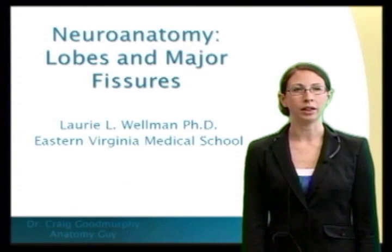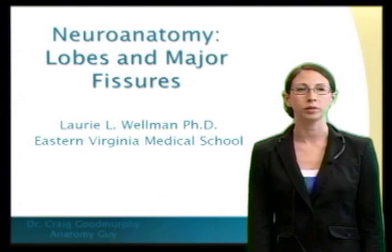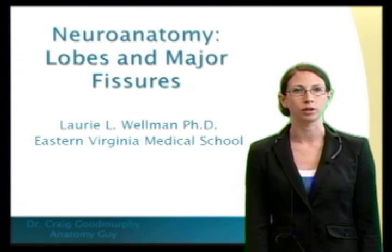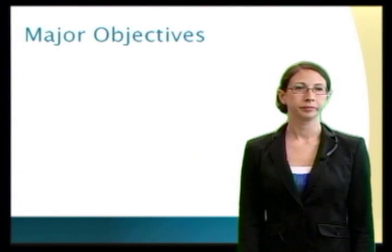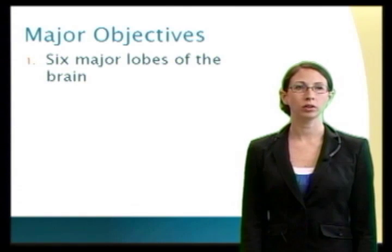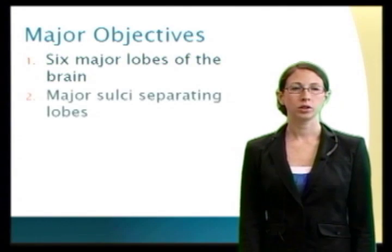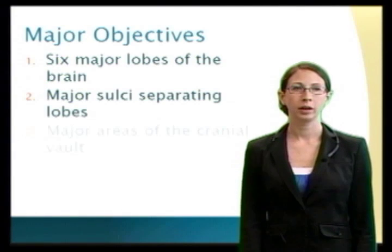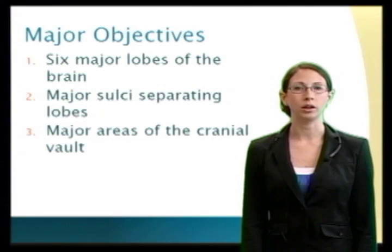Hi, I'm Dr. Laurie Wellman and this week on the Anatomy Guy we're going to be discussing neuroanatomy, specifically the lobes and major fissures. The major objectives for today are to identify the six major lobes of the brain, to identify the major sulci separating each lobe, and to identify the major areas of the cranial vault.